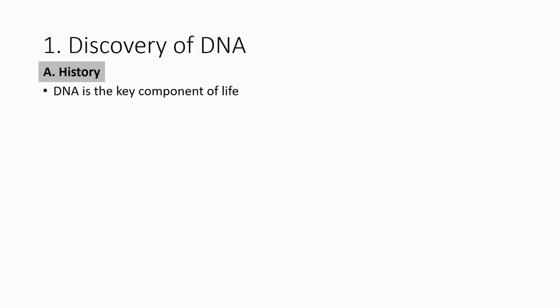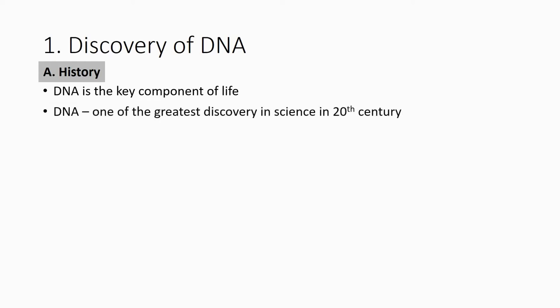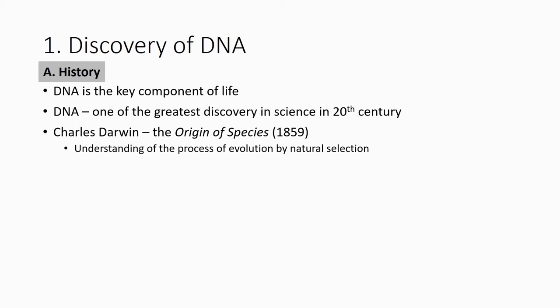The DNA is the key component of life — and it's not too long ago that we knew this. This is one of the greatest discoveries in science in the 20th century. The most important theory in biology is the origin of species and evolution. When Darwin proposed evolution by natural selection, during that time he didn't know about DNA.